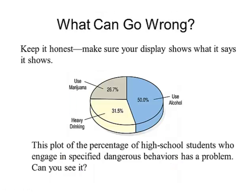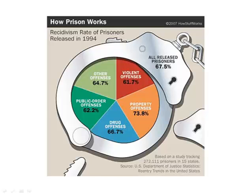Here's another example of what could go wrong with a pie chart. It appears that one section is 50%, but according to the pie chart it looks like less than 50%. We have to keep it honest — make sure your display shows what the data is saying. Another example: this implies it's a pie chart, but these percentages do not add up to 100% — they're more. This is a misleading display.